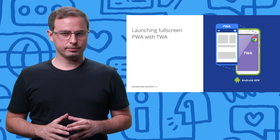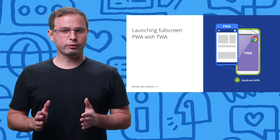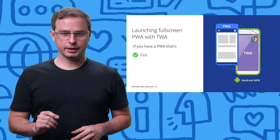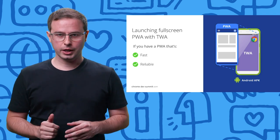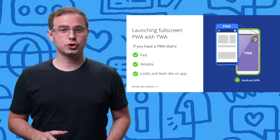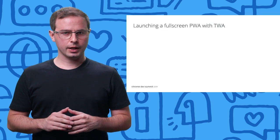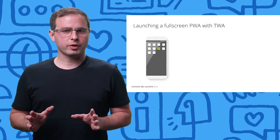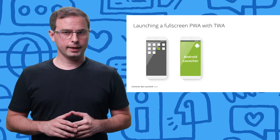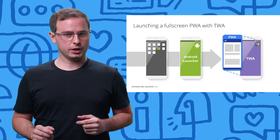Going one step further, TWA is not only useful for certain screens and flows inside your app. If you have a progressive web app that is fast, reliable, and actually looks and feels like an app, you can use trusted web activities to launch your PWA from the Android launcher. In this case, users can arrive at the full screen PWA by clicking on a home screen icon. As a result, they will have the feeling that they are opening a native application instead of a website.